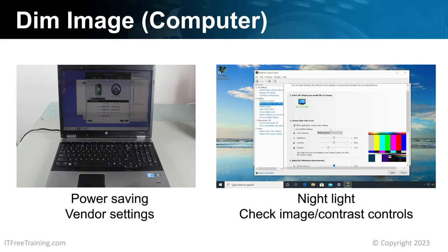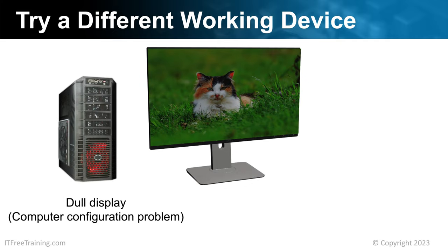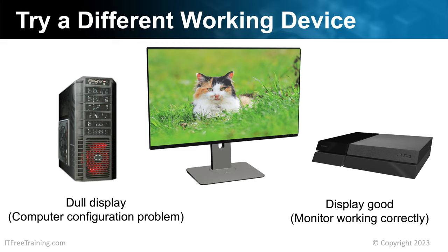What should you do if you are having trouble locating the setting causing the problem? If your computer is displaying a dull image and you are having trouble finding which setting it is, test the screen with another device — any device that can display an image — to determine that the screen is working correctly. If you are using a laptop, plug a monitor into it and select the mirror option. If both images look the same, the problem is caused by a setting on the laptop. If they look different, for example the laptop screen looks very dark, the problem is with the laptop and maybe the backlight needs replacing. Remember that troubleshooting is a process of elimination.